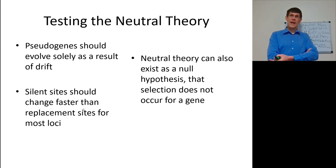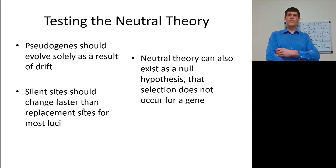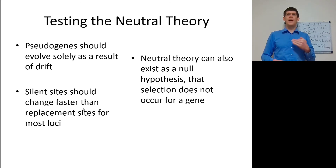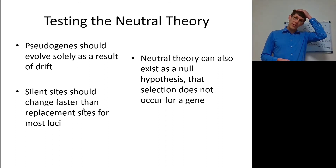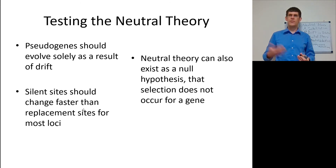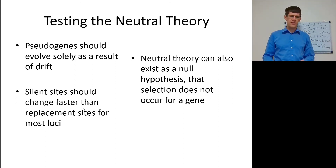How do you test neutral theory? Look at pseudogenes — when you have a duplication of a gene, one copy is transcribed and functional, one is not. Pseudogenes should evolve solely as a result of drift because there is no selection for or against mutations in them. Silent sites should change faster than replacement sites. Introns — transcribed but not translated — are another example. Neutral theory can also serve as a null hypothesis: is the rate of change for a gene greater than, equal to, or less than the neutral rate?